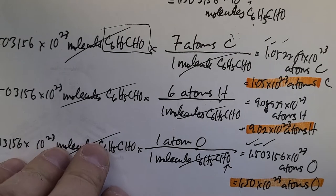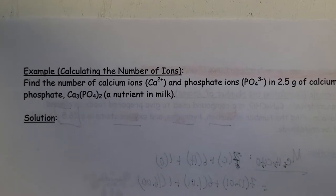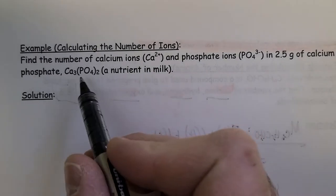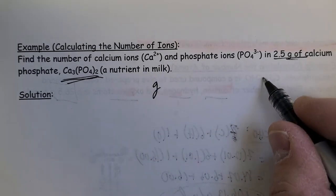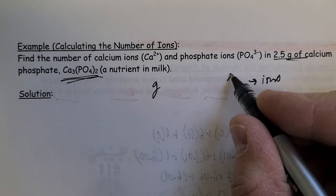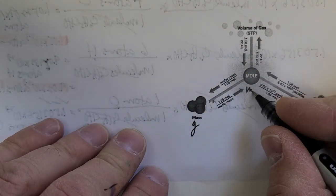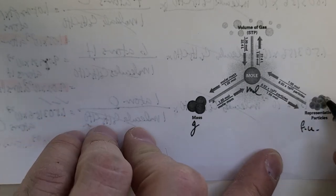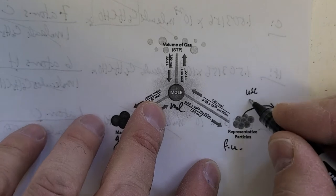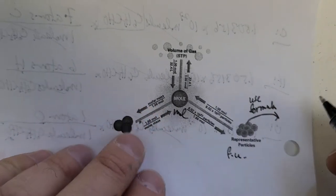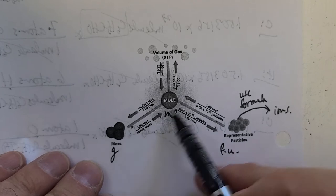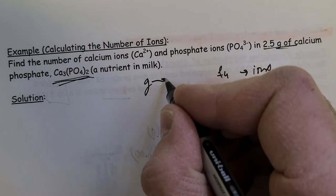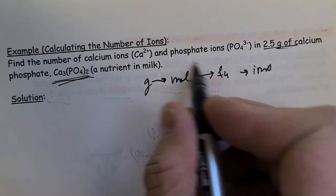By looking at the formula of the compound, you simply read off the atom counts. Now, on the flip side, we'll look at a formula unit example — an ionic compound. We're given grams of calcium phosphate and asked to find how many individual ions there are. The process is: grams → moles → formula units → individual ions. That's three steps total.